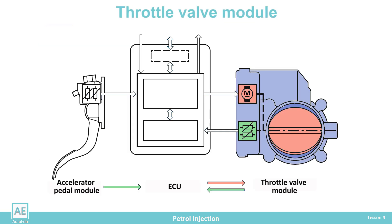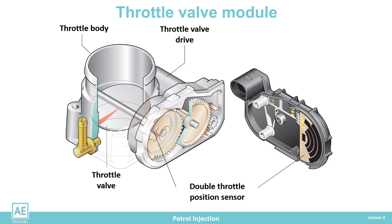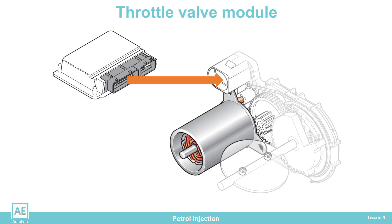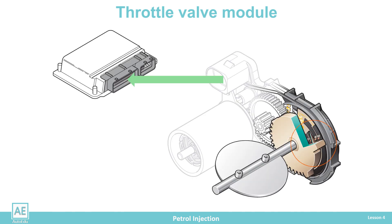The throttle module is located on the intake manifold. The primary elements of the module are the throttle body, throttle valve, throttle valve drive, and double throttle position sensor. The ECU sets the throttle valve in the required position via the electric motor and gear wheel with a spring return system. Two sensors measure the throttle position and send a voltage signal to the ECU.